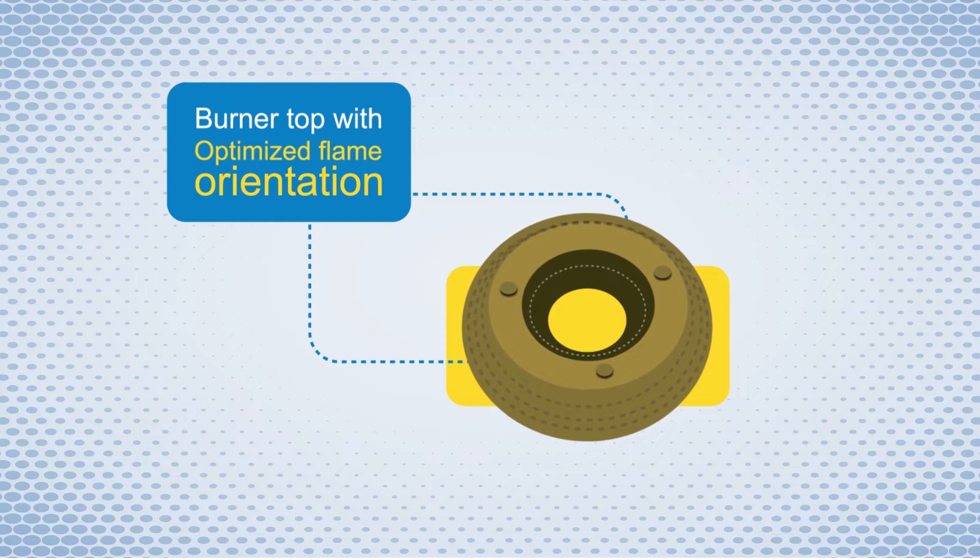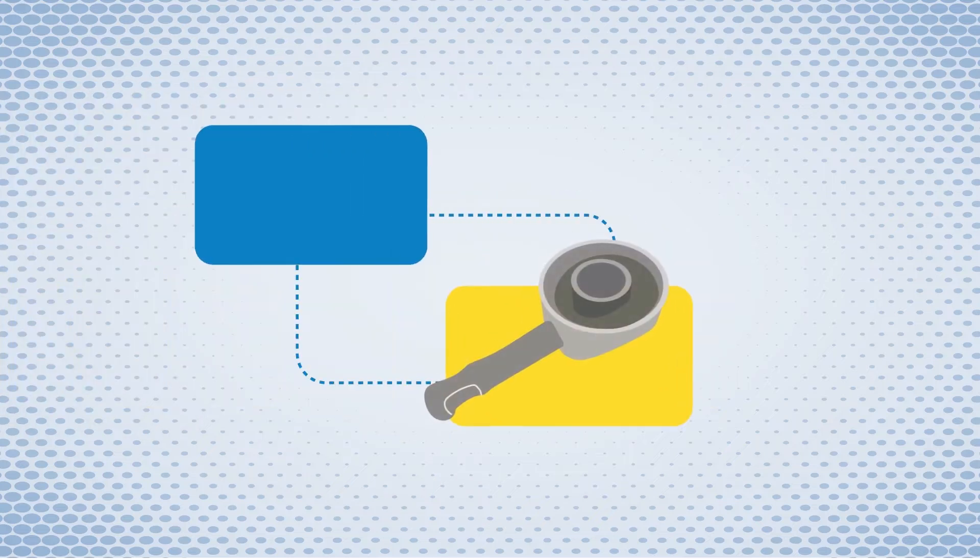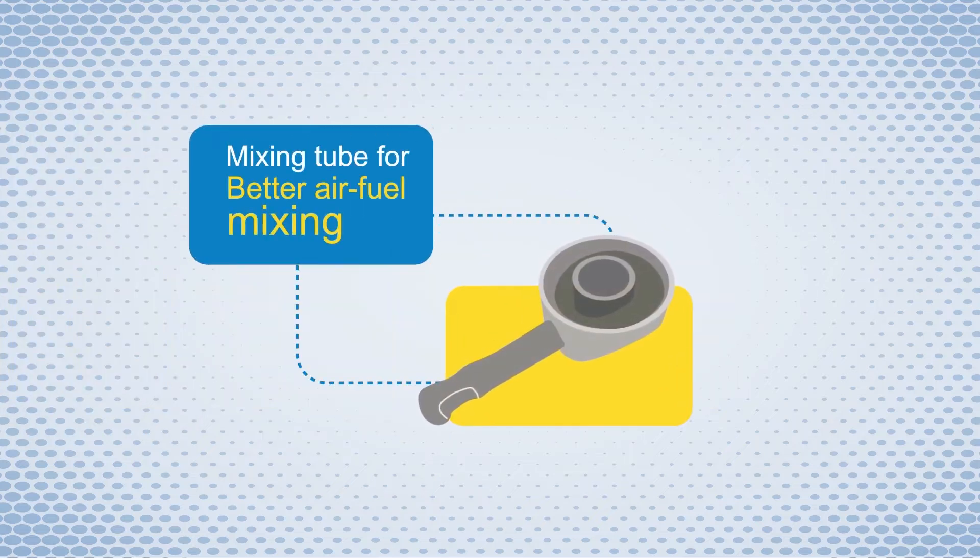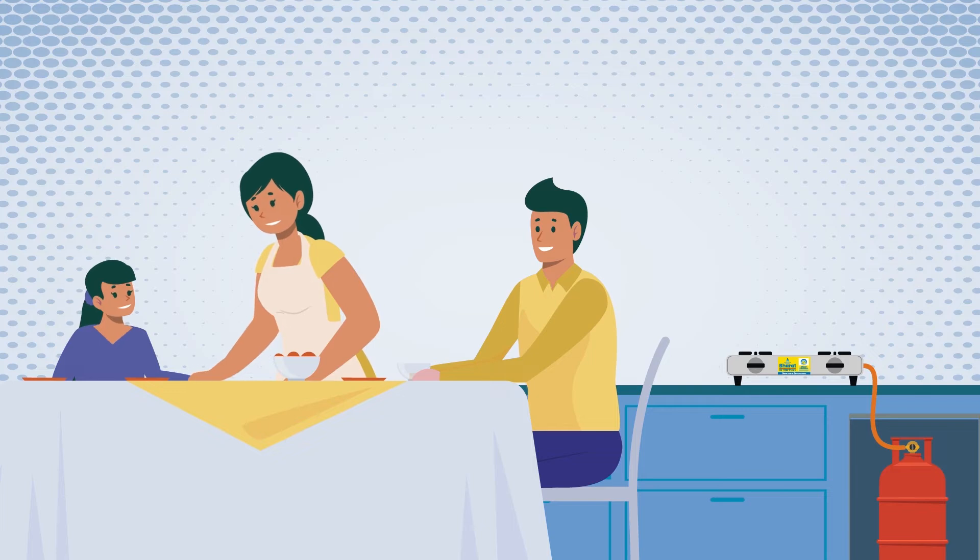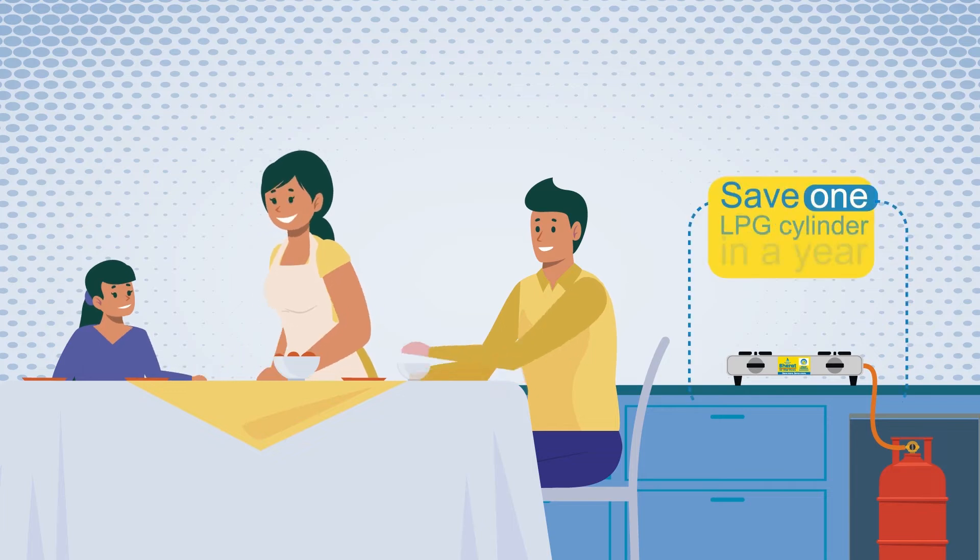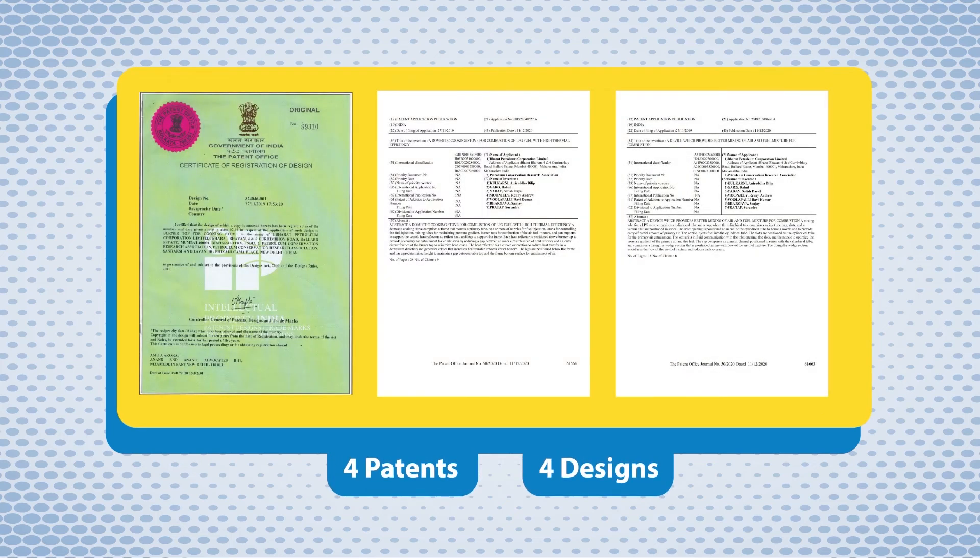An enhanced mixing tube that ensures better air fuel mixing, unique pan support that prevents heat loss. Improved thermal efficiency helps a family save one LPG cylinder in one year. BPCL has filed four patent applications for design registrations at Indian Patent Office.